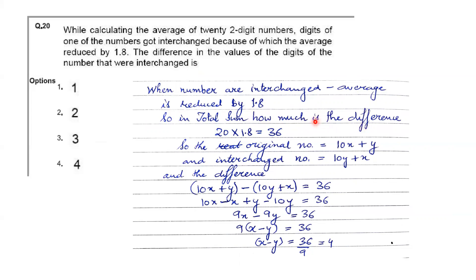The original number is written as 10x + y, where y is the unit digit and x is the tens digit. After interchanging, we get 10y + x. The difference equation becomes: (10x + y) − (10y + x) = 36. Simplifying: 9x − 9y = 36, which gives x − y = 4. So the difference between the two digits is 4.